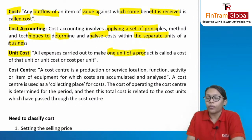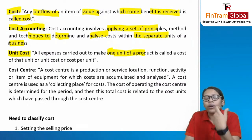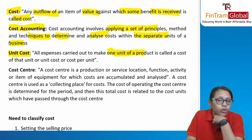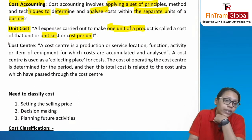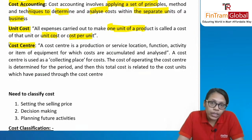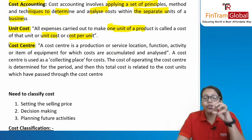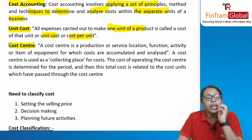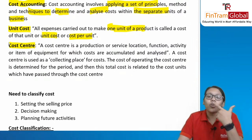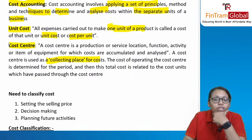Unit cost is all expenses carried out to make one unit of product — that is, what material, labor, and other expenses you put together to produce one unit. This is also known as cost per unit. A cost center is any function, department, or activity for which you are calculating and analyzing cost. It is used as a collecting place for cost; the cost of operating a cost center is determined for the period, then related to the cost units which have passed through it.